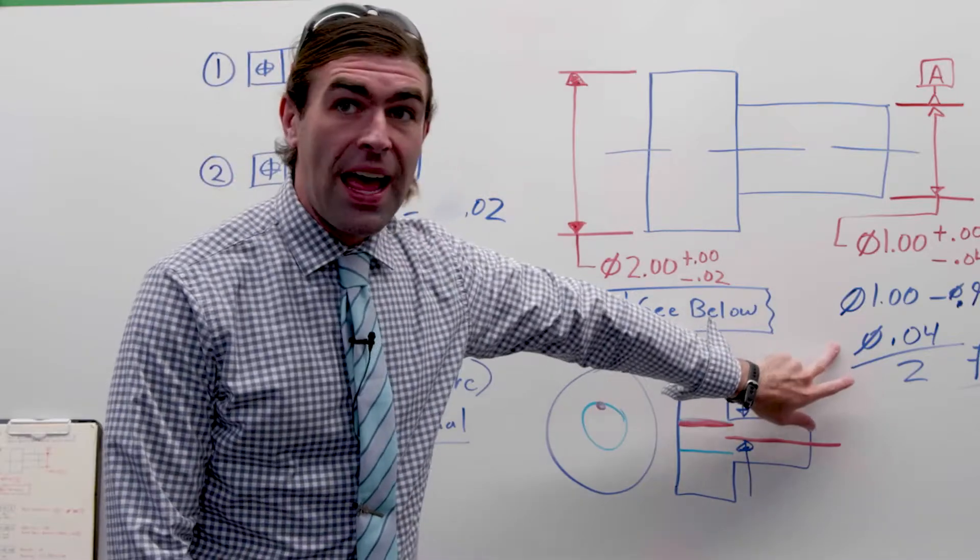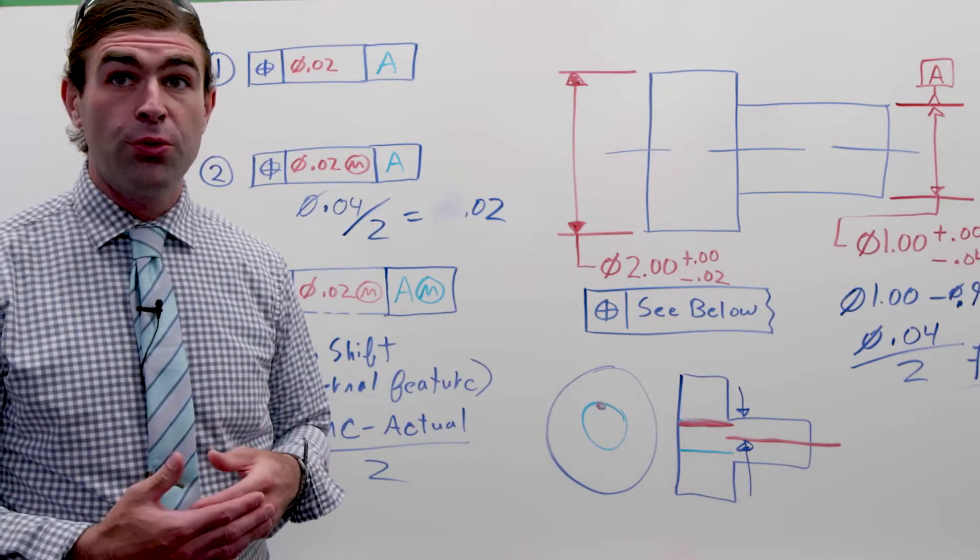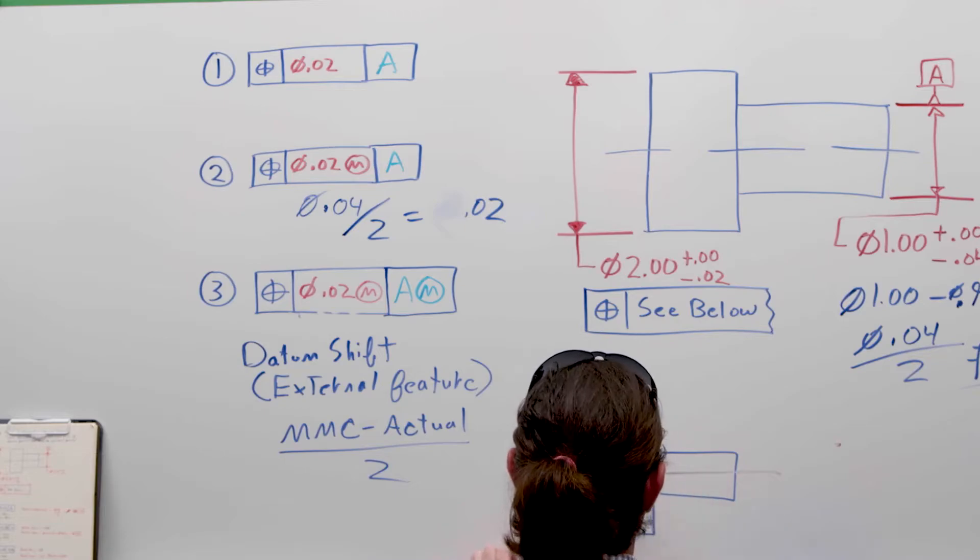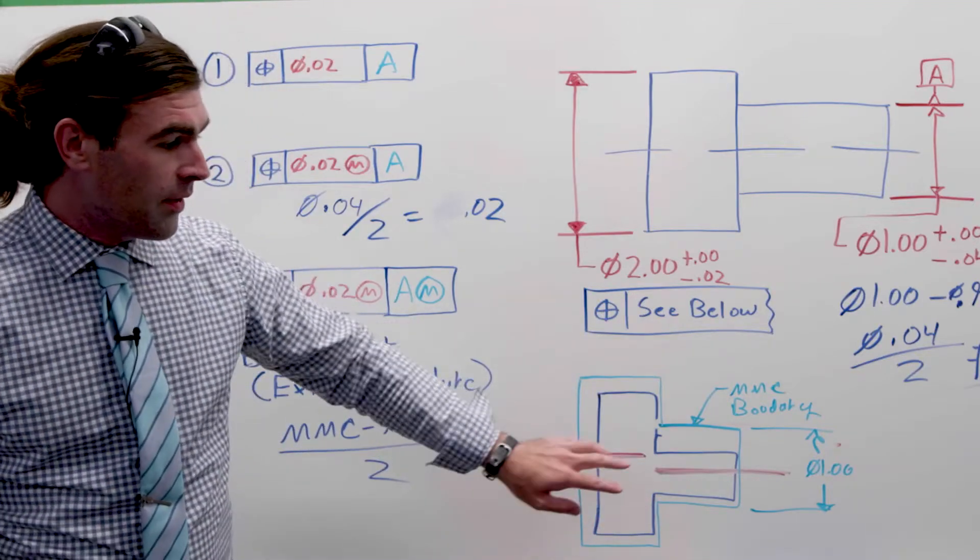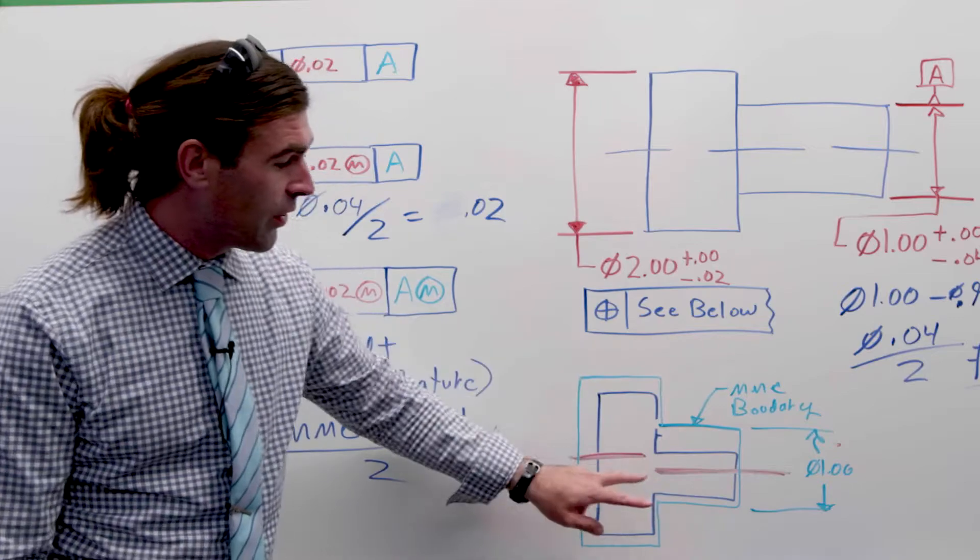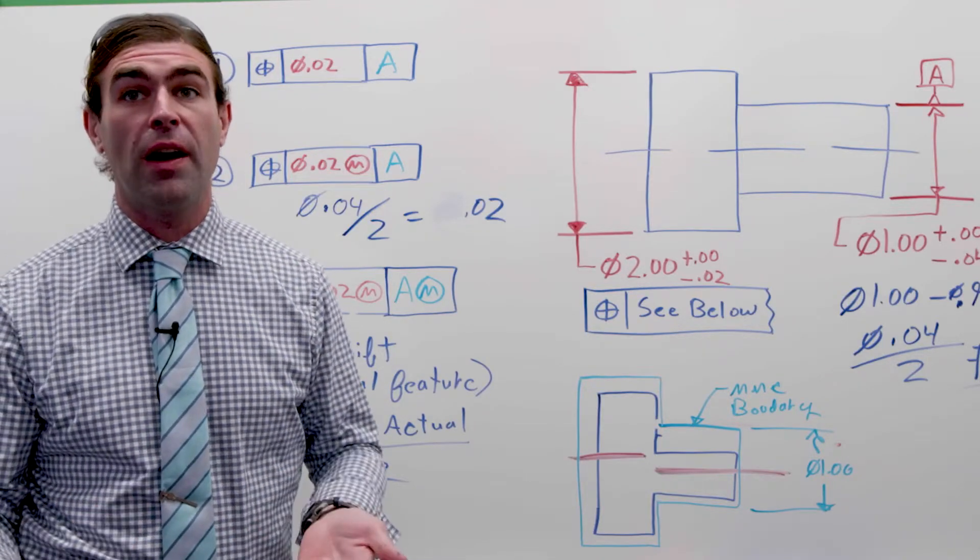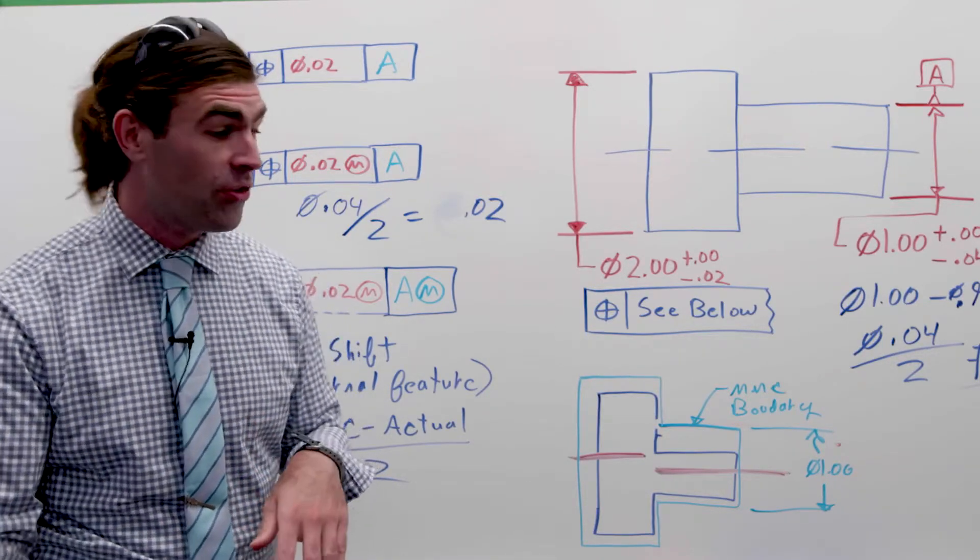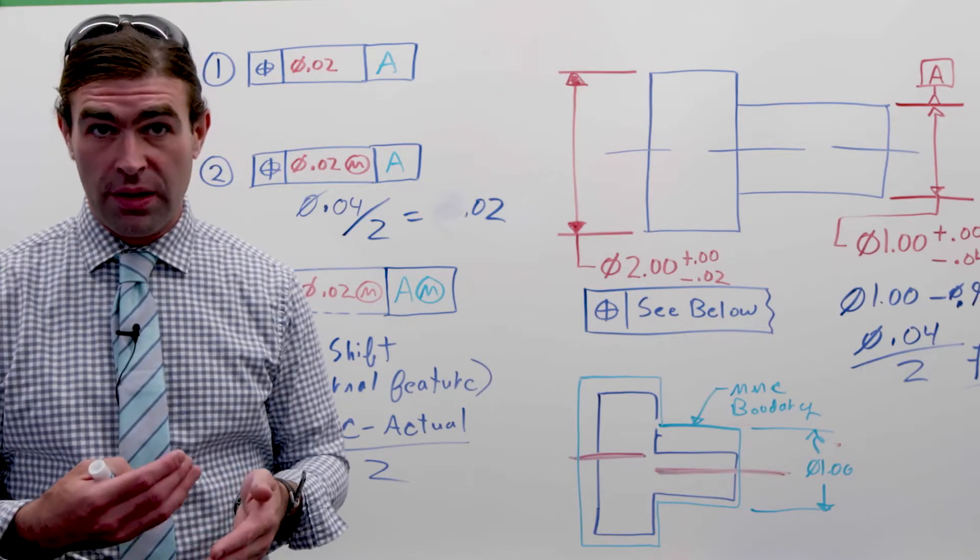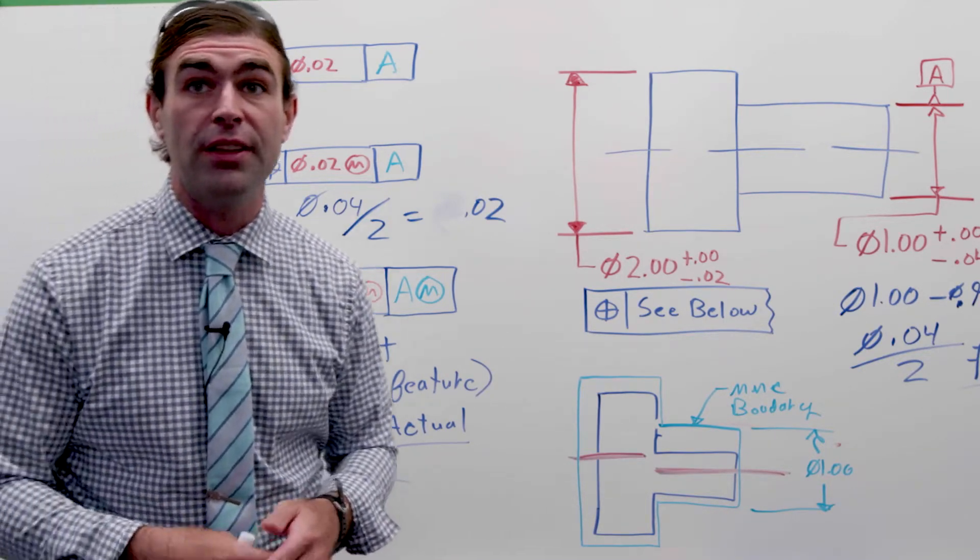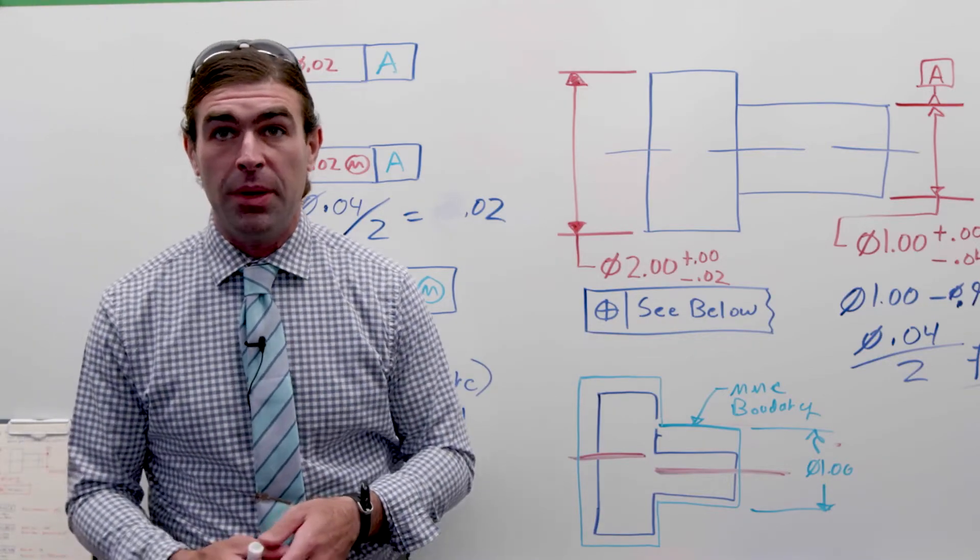The datum shift already takes care of the radial because we divide it by 2. So we're just going to add these two numbers together. If we've got the maximum material boundary of 1 inch, we're saying the datum feature came in small. So it can shift away in a way where it couldn't with the RFS. So it can shift away 20 thousandths. That's our datum shift. We add in the 20 thousandths from the position. It gives us 40 thousandths possible separation between the axis of these two features. So that applies position at MMC, datum feature at MMC.